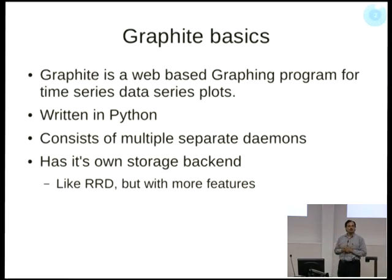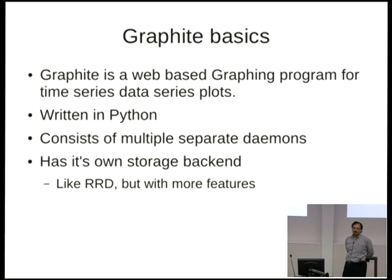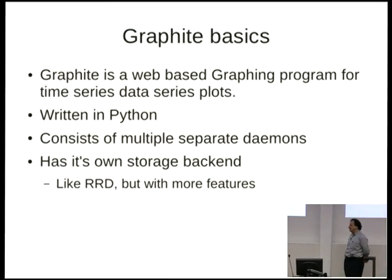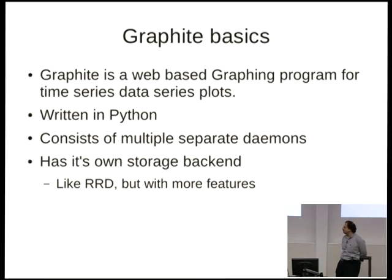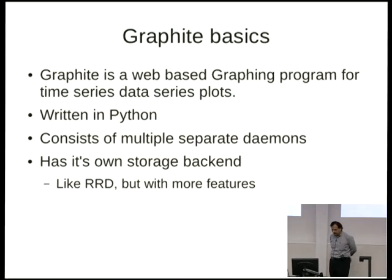For those of you who don't know what Graphite is, it's a time series database — similar to MRTG or Cacti-type stuff. It's from one of our competitor travel companies, but it's written in Python, Apache licensed, and it's designed fairly well, except for the fact that we pushed it well beyond its limits. It has no ACLs — it's completely non-enterprise-y. That's a big win.